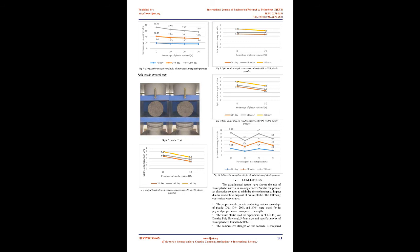4. Plastic: Plastic is a material consisting of any of a wide range of synthetic or semi-synthetic organics that are malleable and can be molded into solid objects of diverse shapes. Plastics are typically organic polymers of high molecular mass, but they often contain other substances. They are usually synthetic, most commonly derived from petrochemicals, but many are partially natural. Plasticity is the general property of all materials that are able to irreversibly deform without breaking, but this occurs to such a degree with this class of moldable polymers that their name is an emphasis on this ability.